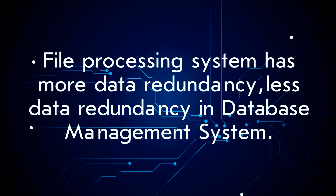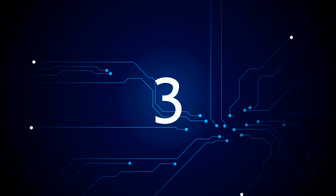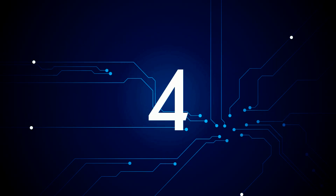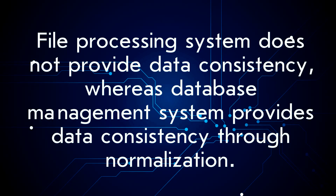File processing system has more data redundancy, whereas there is less data redundancy in a database management system. File processing system provides less flexibility in accessing data, whereas database management system has more flexibility in accessing data. File processing system does not provide data consistency, whereas database management system provides data consistency through normalization.